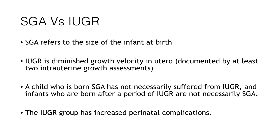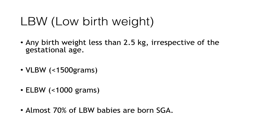So these two terms are not equal. It is true that some SGA babies may be IUGR, or an IUGR baby can be born as an SGA baby. The IUGR subgroup has increased perinatal complications. Coming to low birth weight, it is mainly used for epidemiological purposes — any birth weight less than 2.5 kg, irrespective of gestational age, is taken as low birth weight. This is further subclassified into VLBW, whose weight is less than 1.5 kg, and ELBW, whose birth weight is less than 1 kg. Almost 70% of low birth weight babies are born SGA.